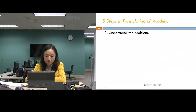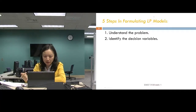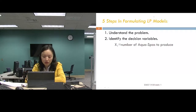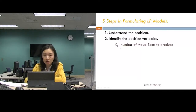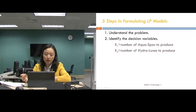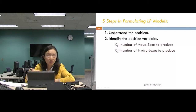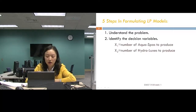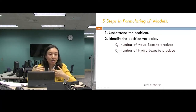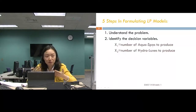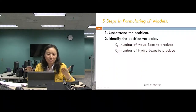Let me go through the five steps. First, understand the problem and identify the decision variables — think about what decisions are involved. Then define the decision variables clearly. Here, X1 represents the number of AquaSpas to produce, and X2 represents the number of HydroLuxes to produce. It's important to specify decision variables very clearly.